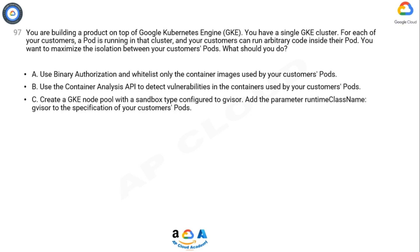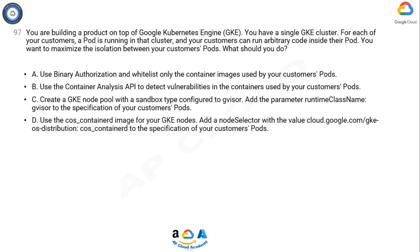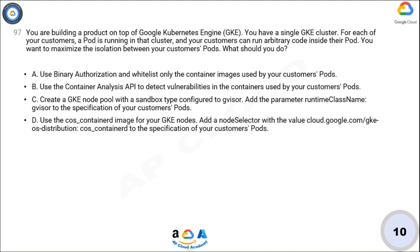Option C: Create a GKE node pool with a sandbox type configured to gVisor; add the parameter runtime class name gVisor to the specification of your customers' pods. Option D: Use the cos_containerd image for your GKE nodes; add a node selector with the value cloud.google.com/gke-os-distribution: cos_containerd to the specification of your customers' pods. Now take 10 seconds to think about the answer.